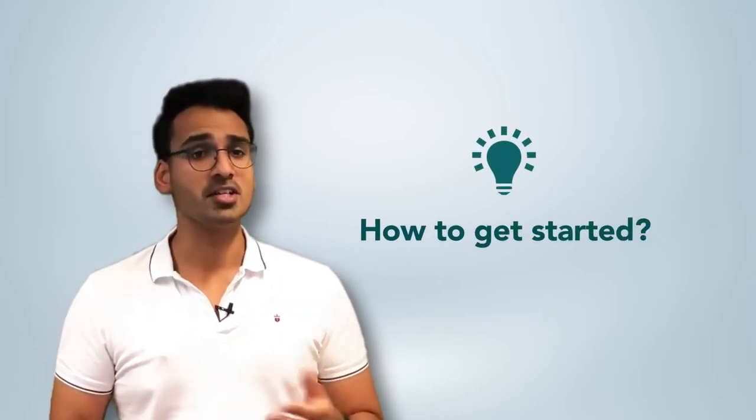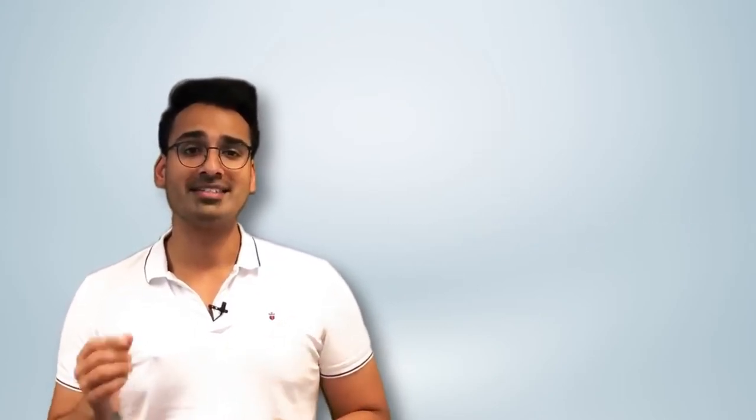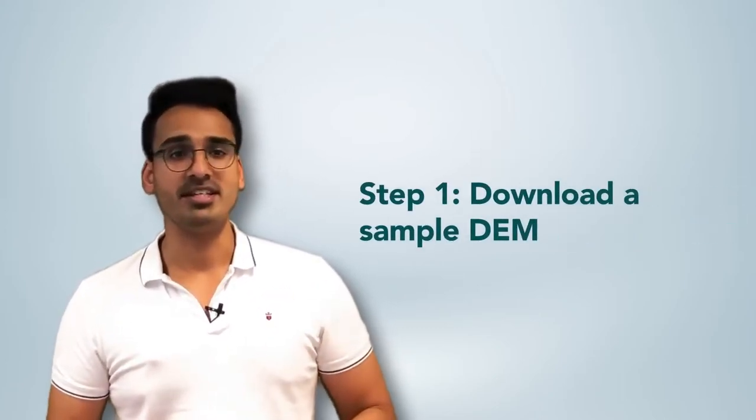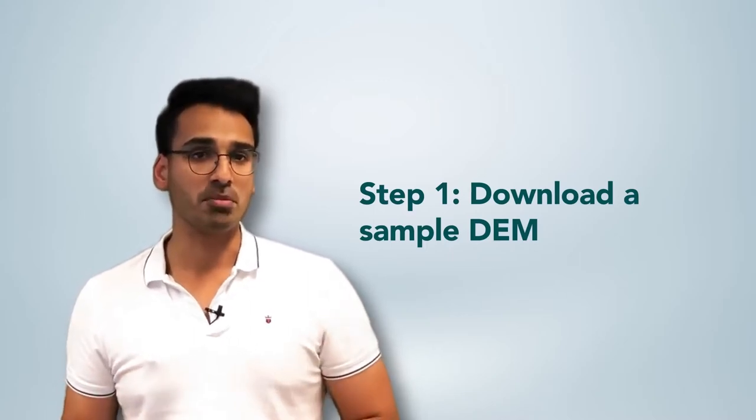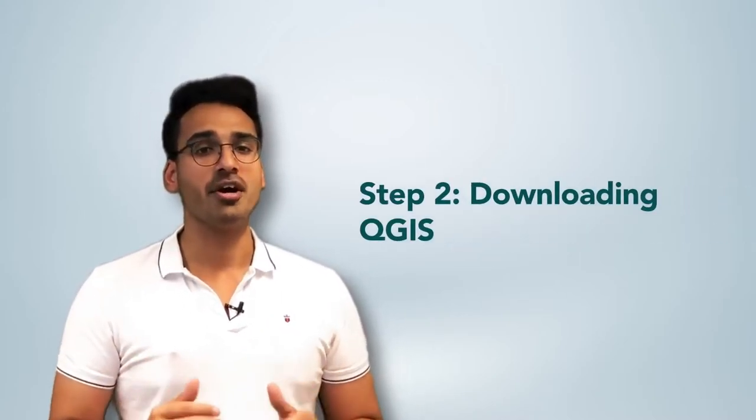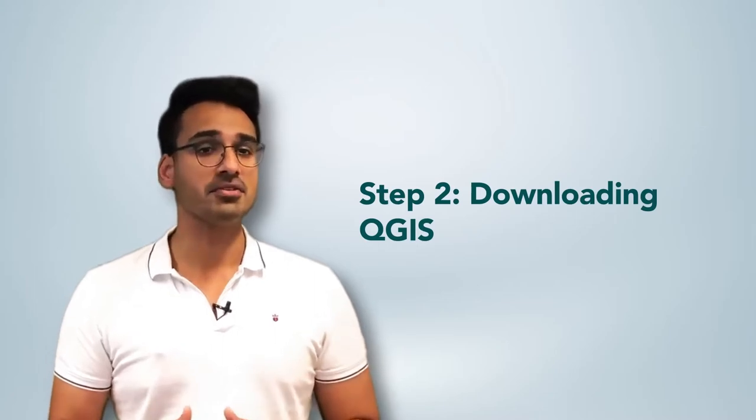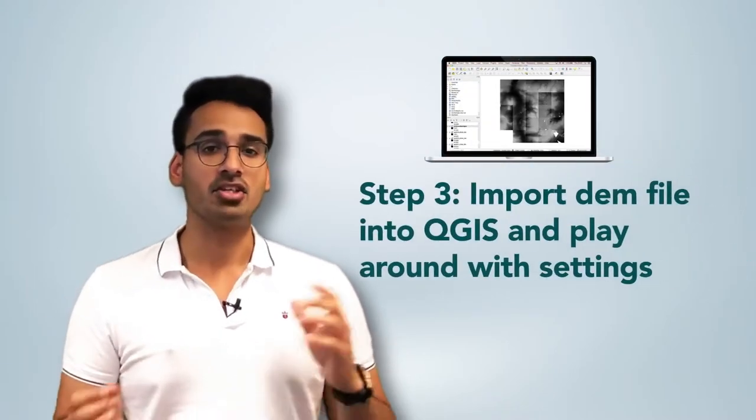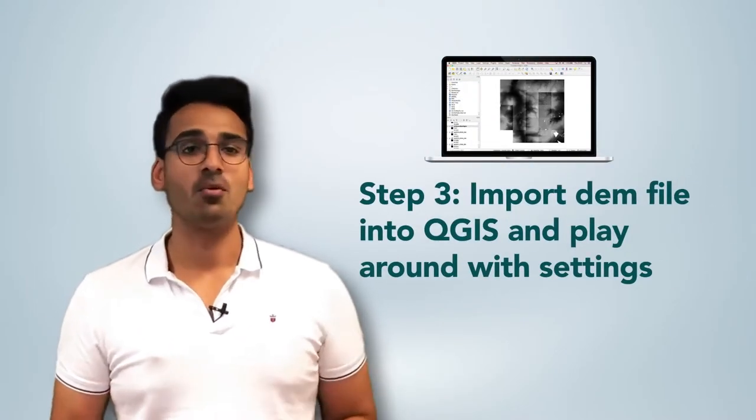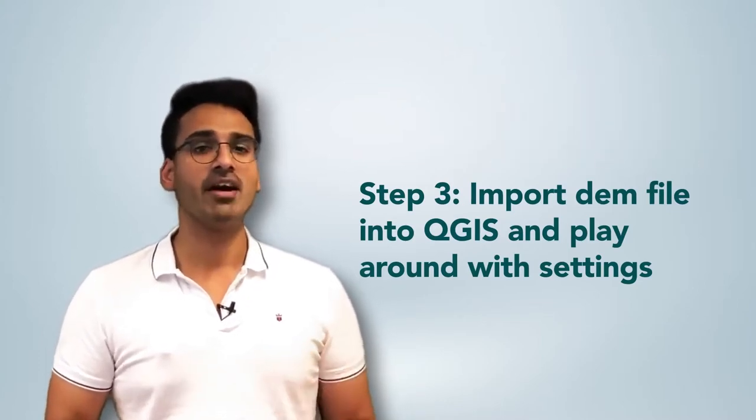Well, to get started, we would highly recommend downloading a sample DEM from OpenDEM or other sources. We'll link them in the description below. Then downloading QGIS, a software tool which can visualize and process these files. Import the DEM file into QGIS and have a look around with the file properties. Get used to playing around with the file origin, the size, the height and width. Visualize this and transform the file in multiple different coordinate systems.